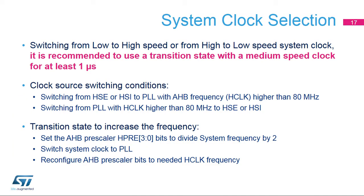In STM32G4 devices, it is recommended to use a transition state while switching from low to high-speed or from high to low-speed system clock. To increase the frequency, the AHB clock frequency has to be divided by 2 prior to switching the system clock to PLL. After a 1 microsecond delay, the prescaler providing the AHB clock can be set to the targeted frequency. This is needed when switching from HSE or HSI to PLL, and the system frequency becomes higher than 80 MHz.